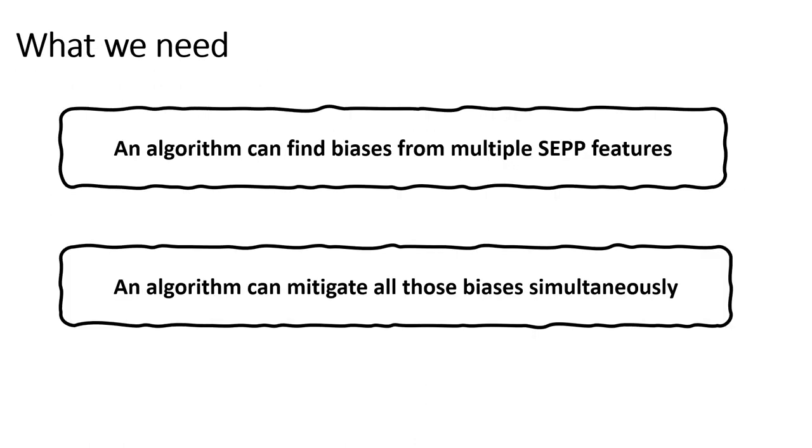We require an algorithm to first find bias automatically from multiple SRP features, and then mitigate all those biases simultaneously.